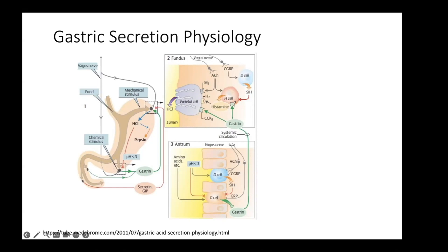The parietal cell is really the workhorse here. Under the control of histamine, acetylcholine, and gastrin, it produces hydrochloric acid. The problem in autoimmune gastritis is that antibodies are made to the parietal cells — specifically to the potassium-hydrogen ATPase. Several factors lead to persistently increased levels of gastrin that play into the pathophysiology.